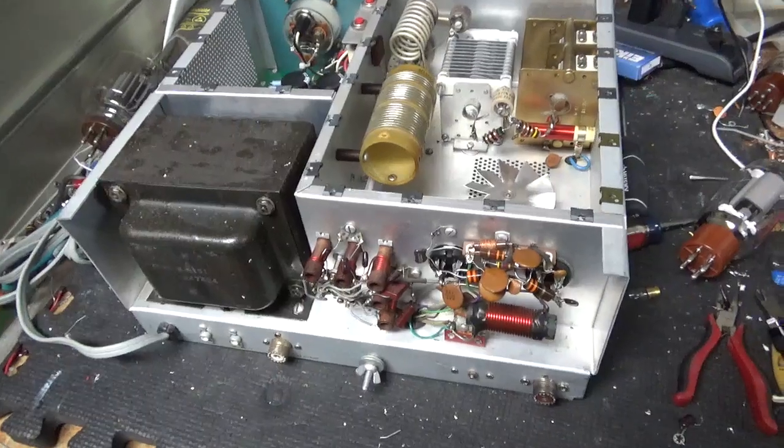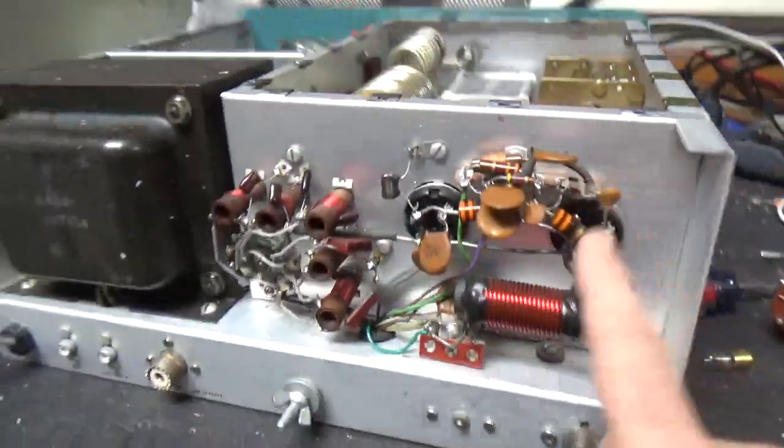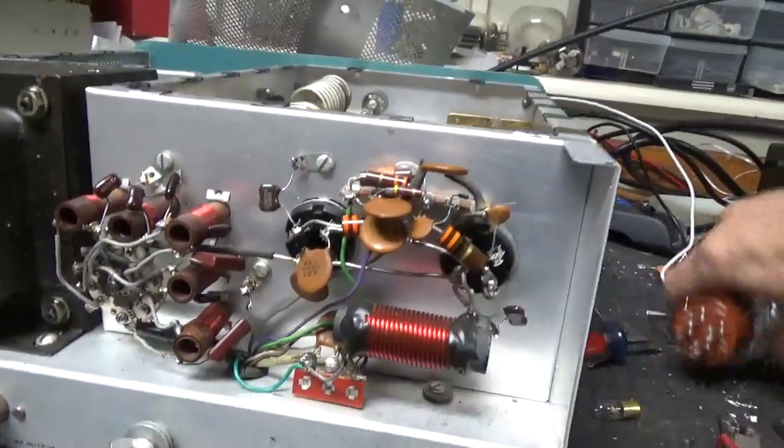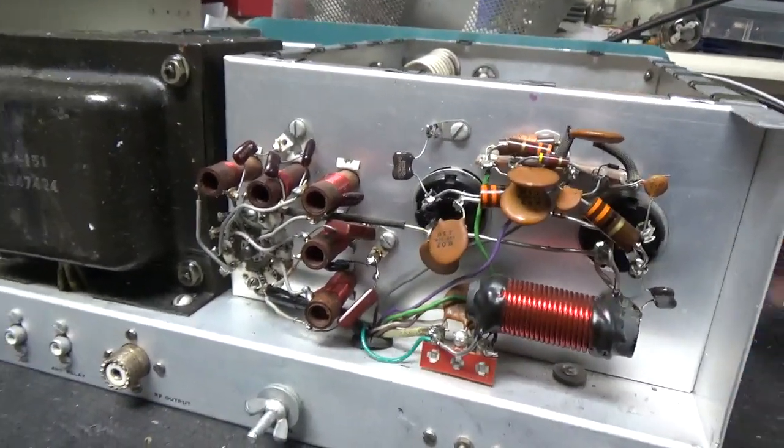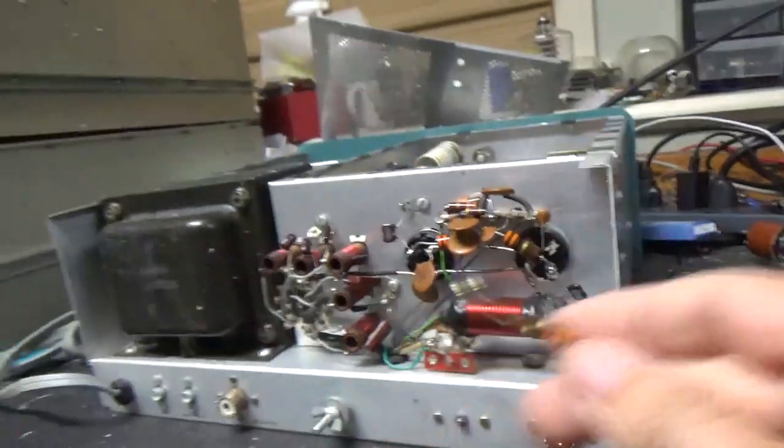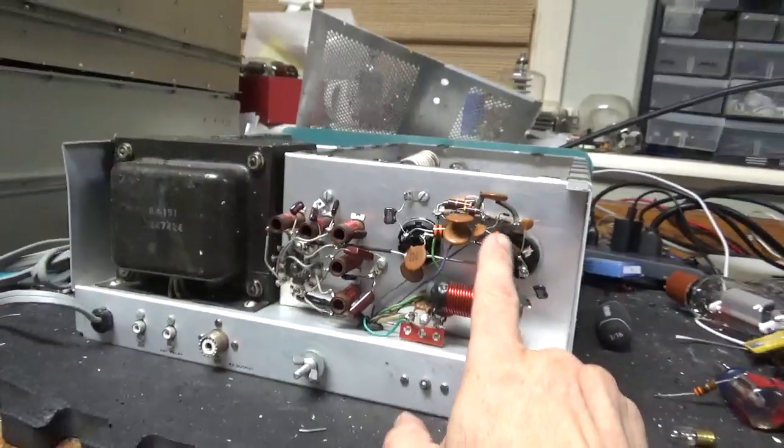Okay, so I'm back with the completed SB200, replace the grid loading resistors, these are around here somewhere, here's one of them.